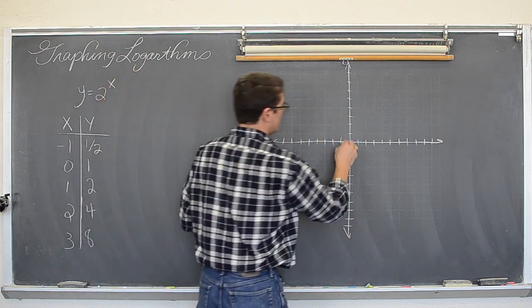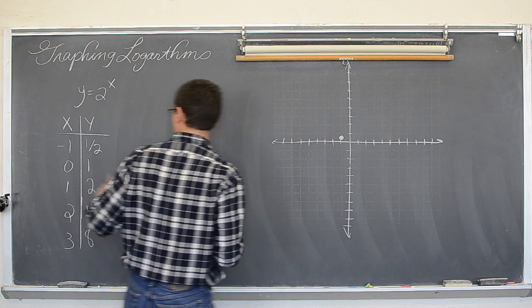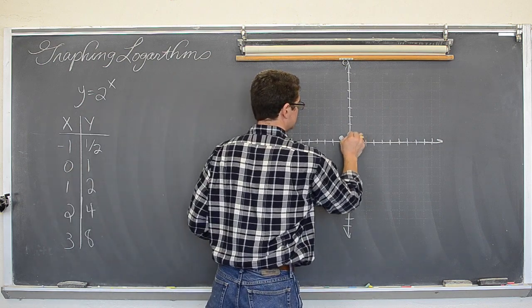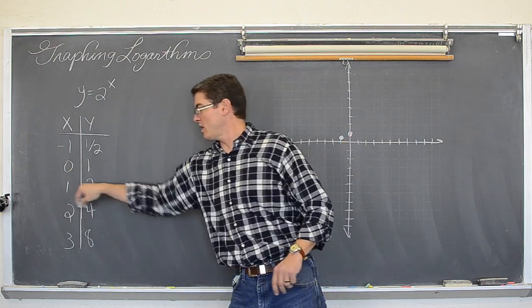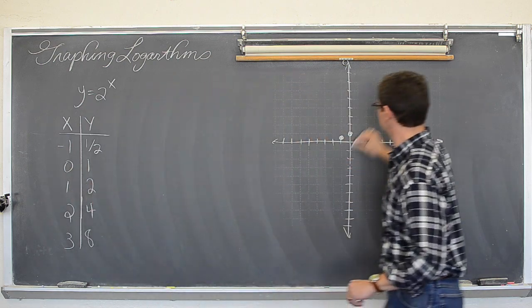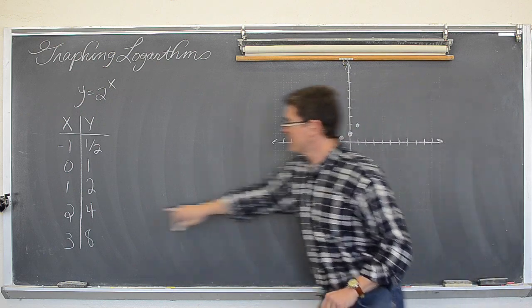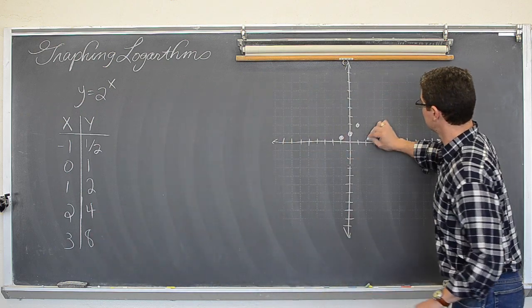Negative one, one half. Zero, one. We have got one, two. And we have got two, four, and three, eight.